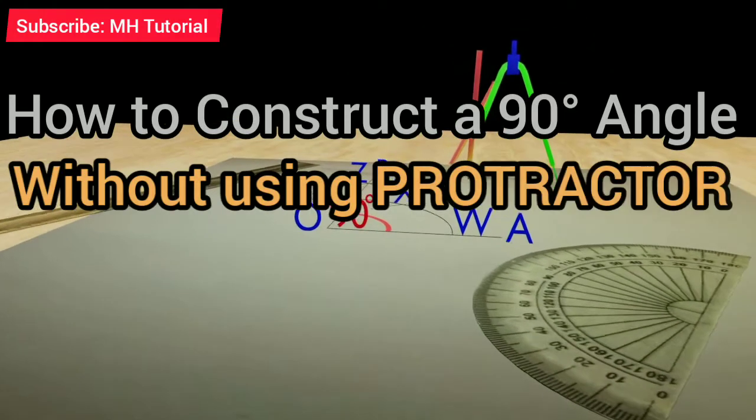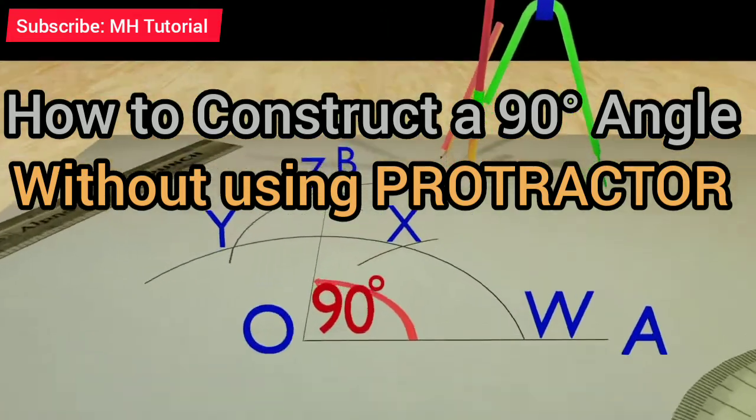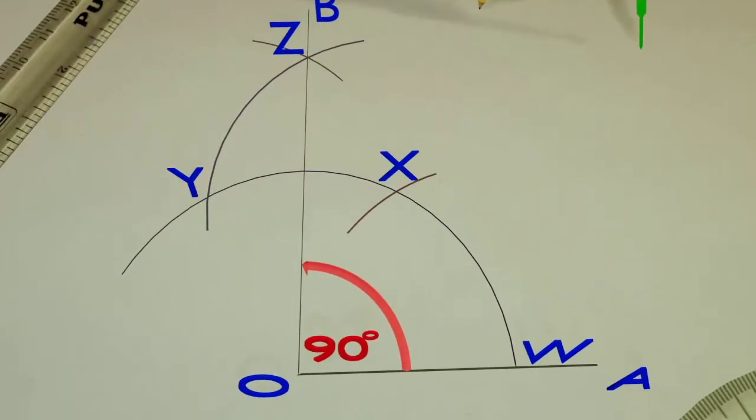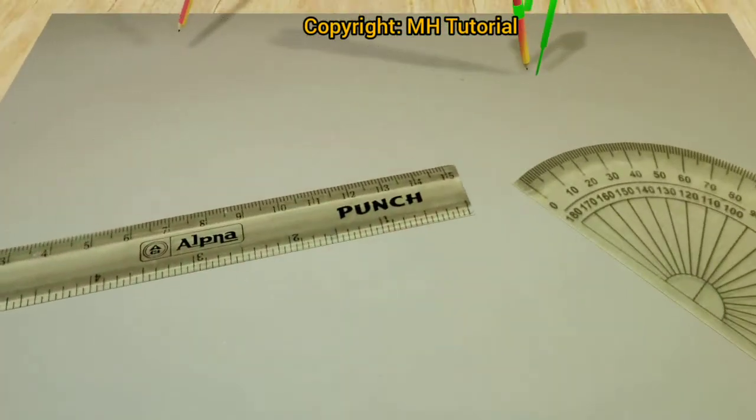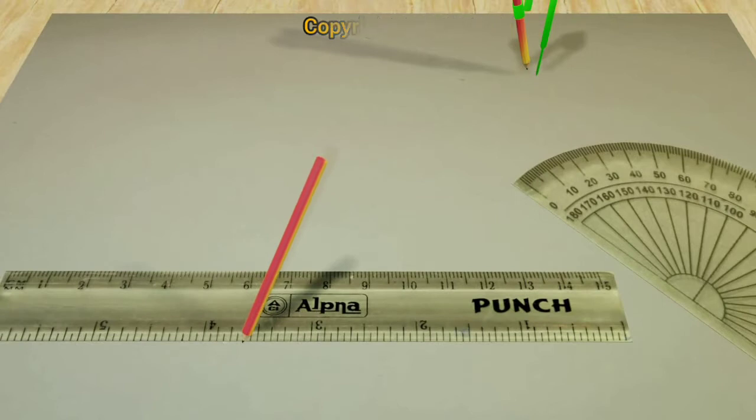How to draw a 90-degree angle without the help of a protractor. In this video, we are going to learn the total procedure through an animation. First, with a scale and a pencil, a straight line is drawn in the middle of the page.